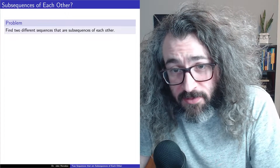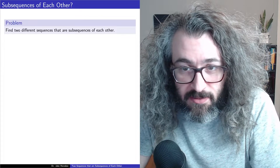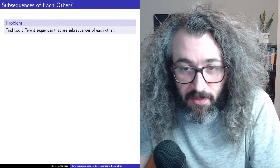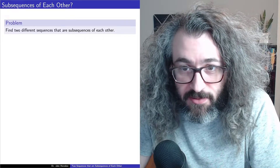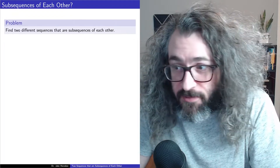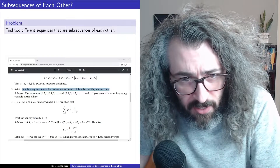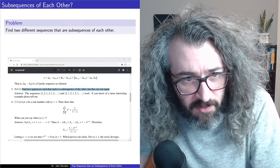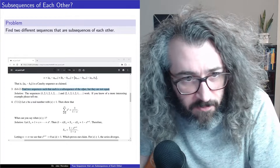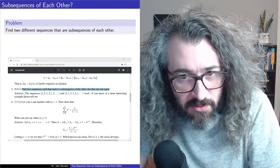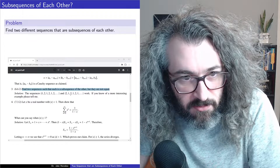Now on to the solution. I found this question on a practice exam, and that exam had a solution on it, so I'll tell you that solution first. Here is that practice exam. It says: find two sequences such that each is a subsequence of the other. And the solution that they give is these two sequences.